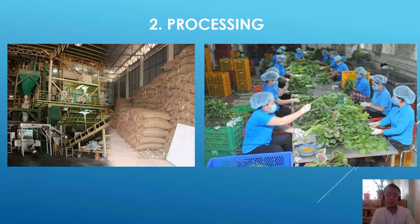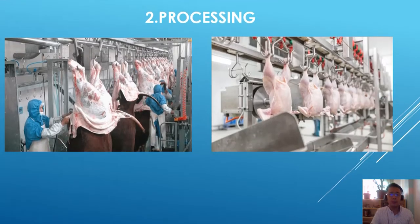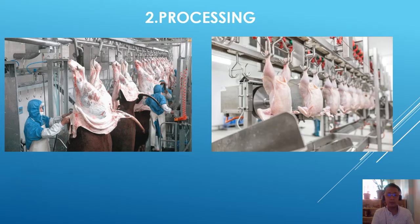The second step is processing. The picture on the left shows the processing of packing the rice, and on the right side is the processing of vegetables for the market. The next example shows the processing of cattle meat on the left side, and on the right side, a very large-scale operation in the processing of chicken broiler meat.